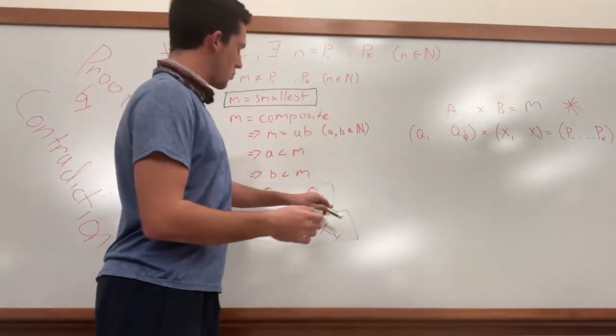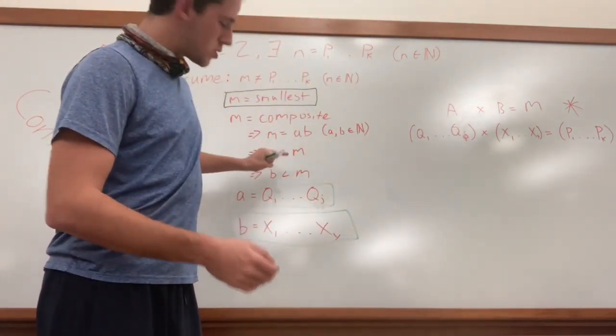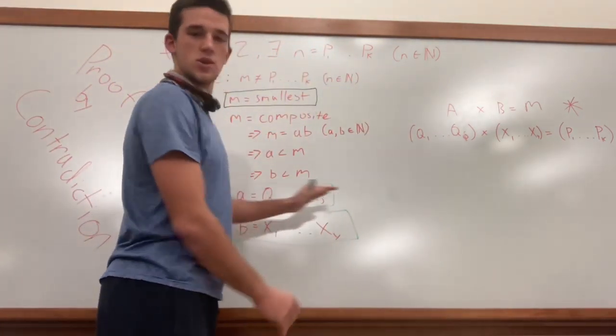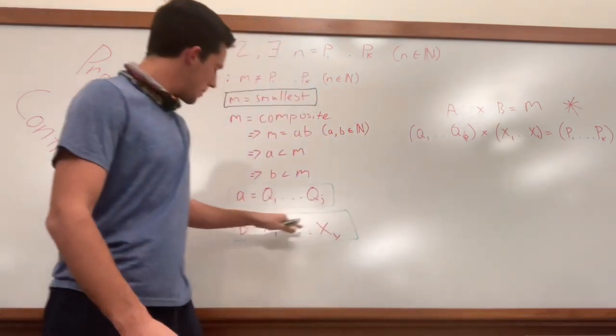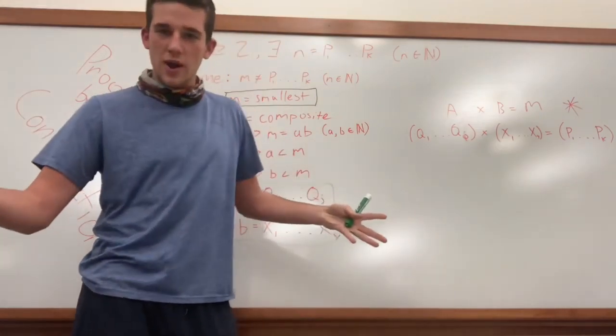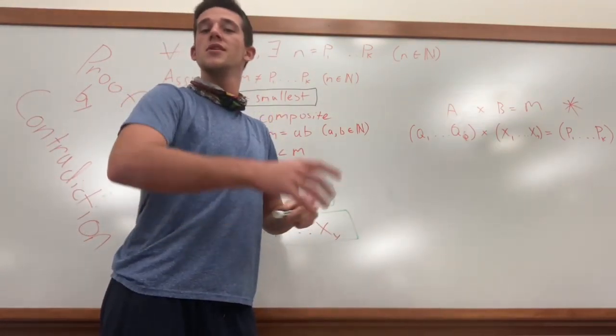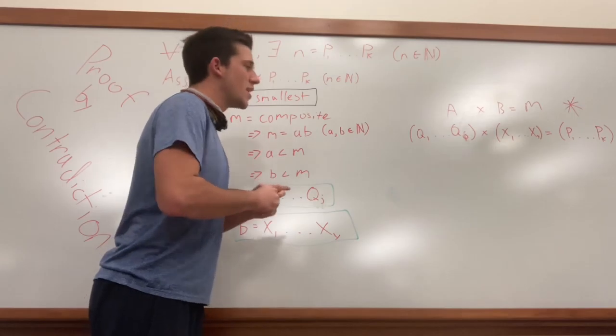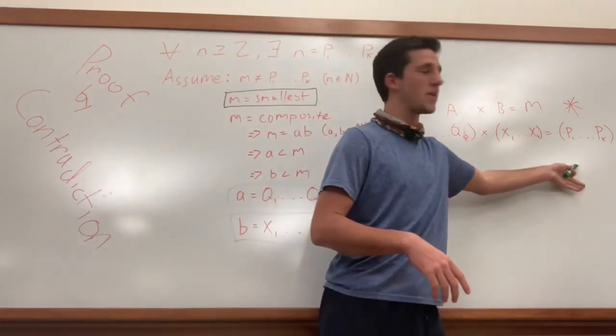So, from this information, we can see that a times b equals m. So we'll take a, which is this q product of primes over here, times b, which is this x product of primes over here, and does anyone know what happens when we multiply two products of primes? Anyone? Anyone? No? Okay. We get another product of prime numbers.